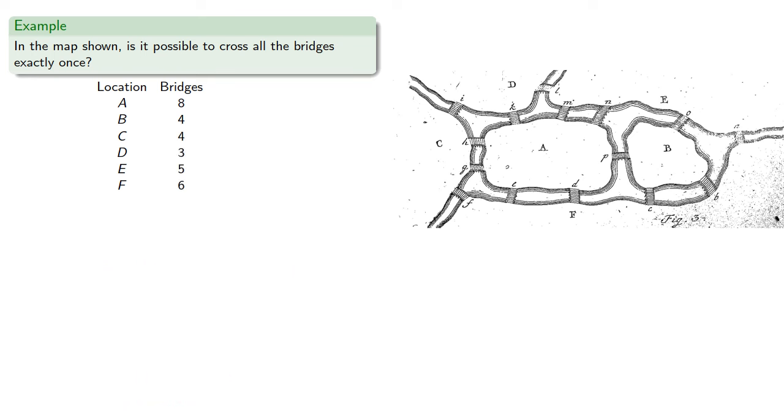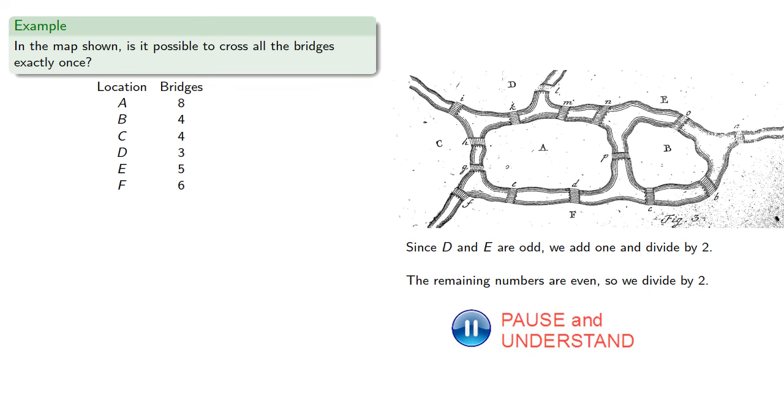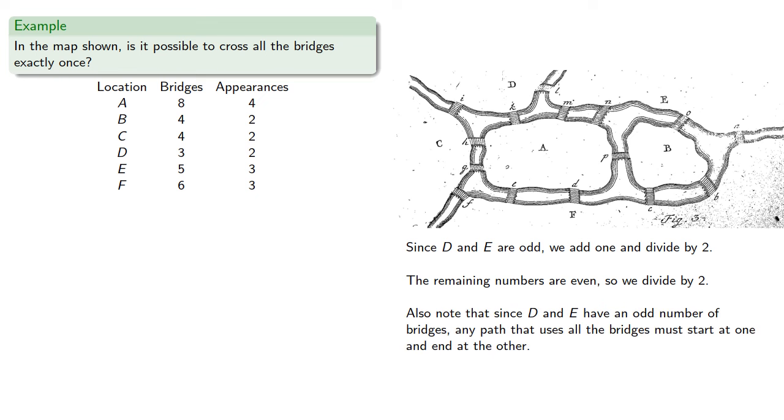Now since D and E have an odd number of bridges, then we add one and divide by two. The remaining numbers are even, so we divide by two. And we might also note that since D and E have an odd number of bridges, any path that uses all the bridges must start at one and end at the other.